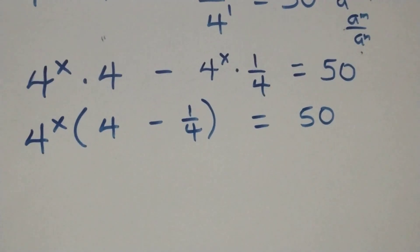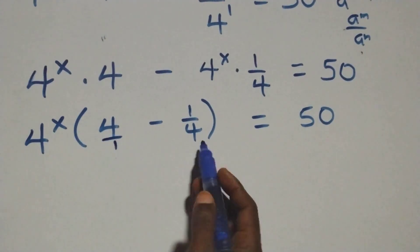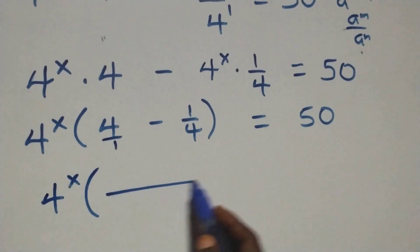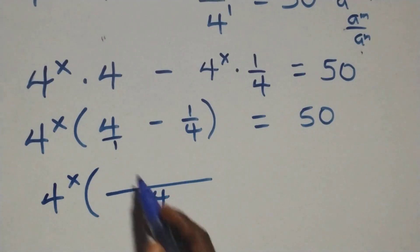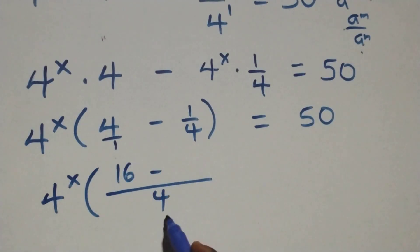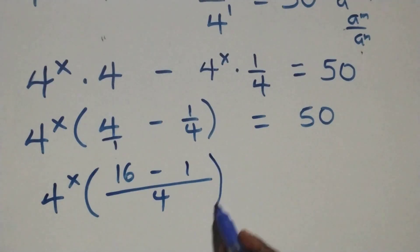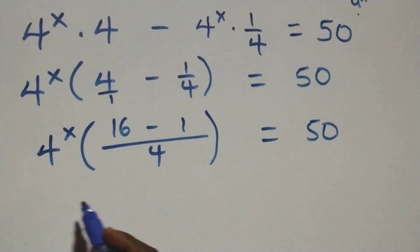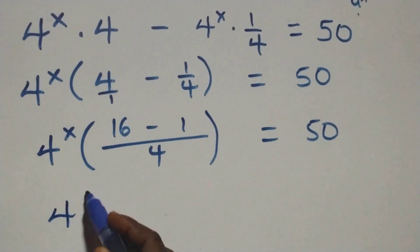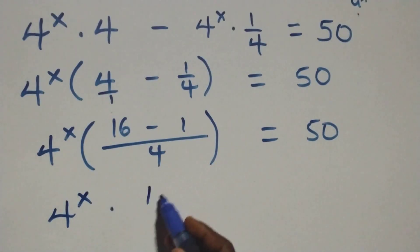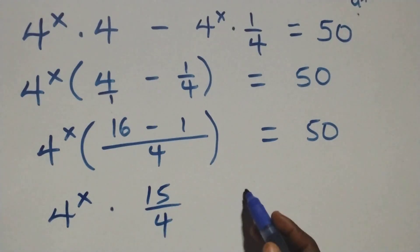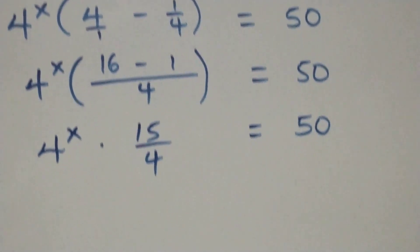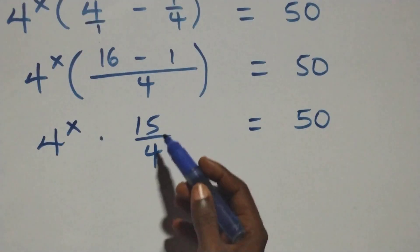At this, next step here, we have 4 raised to power x into bracket. Here we have 4 raised to power x times 16 minus 1, that's 15, then over 4, equals 50.